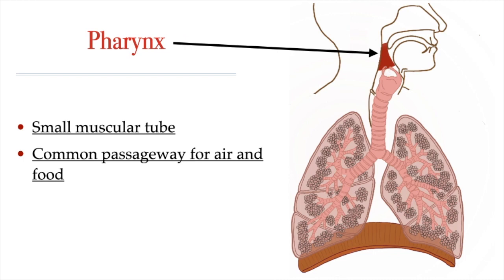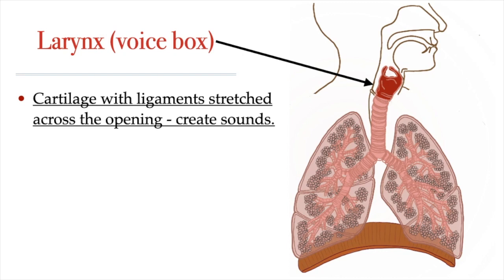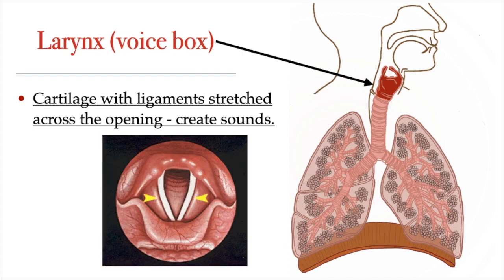If you remember, we learned about the epiglottis during our digestive system lessons. Then we enter the larynx. The larynx connects the lower part of the pharynx to the trachea. It keeps the air passages open during breathing and is the main organ responsible for producing sound. The larynx is made of cartilage. Inside the larynx are the vocal cords, which have elastic ligaments at their core.